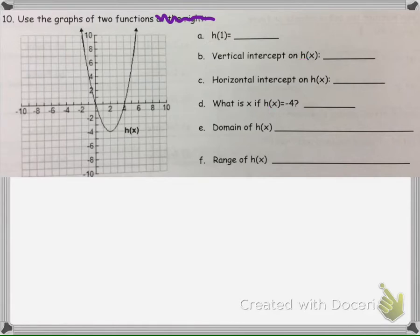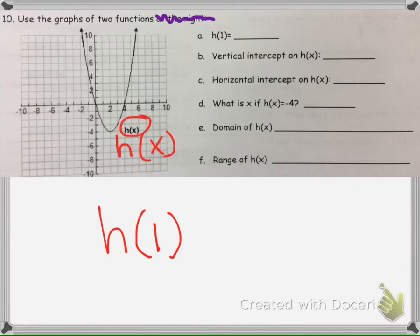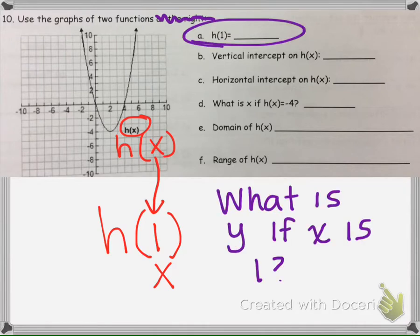The first question asks us to find h of 1. Remember that this graph is labeled h of x. Instead of x, it's telling us to find the output if we input an x value. So it's asking essentially: what is y if x is 1?